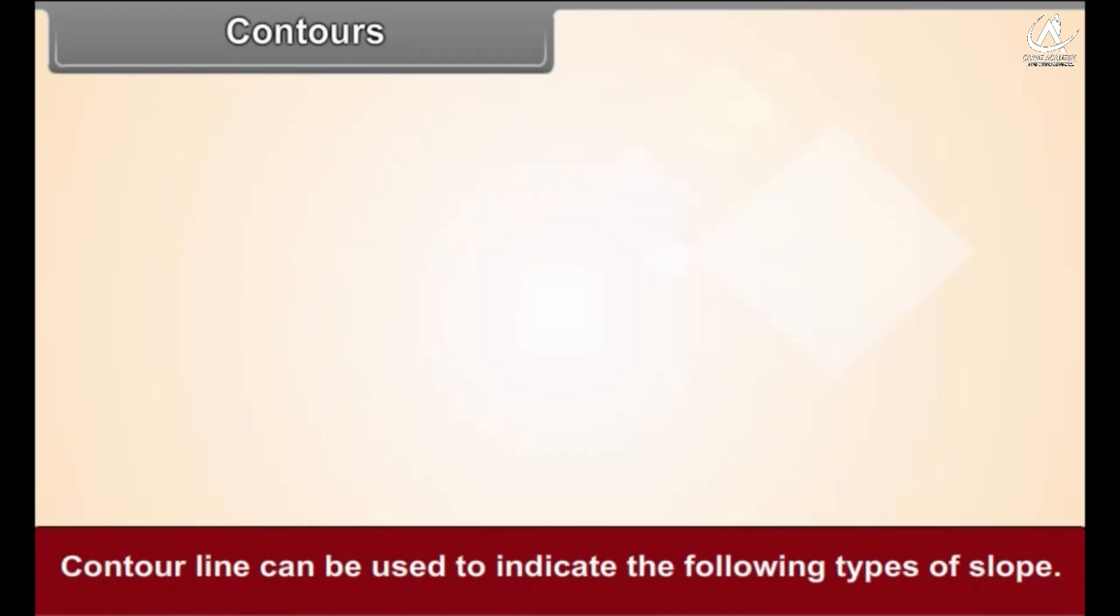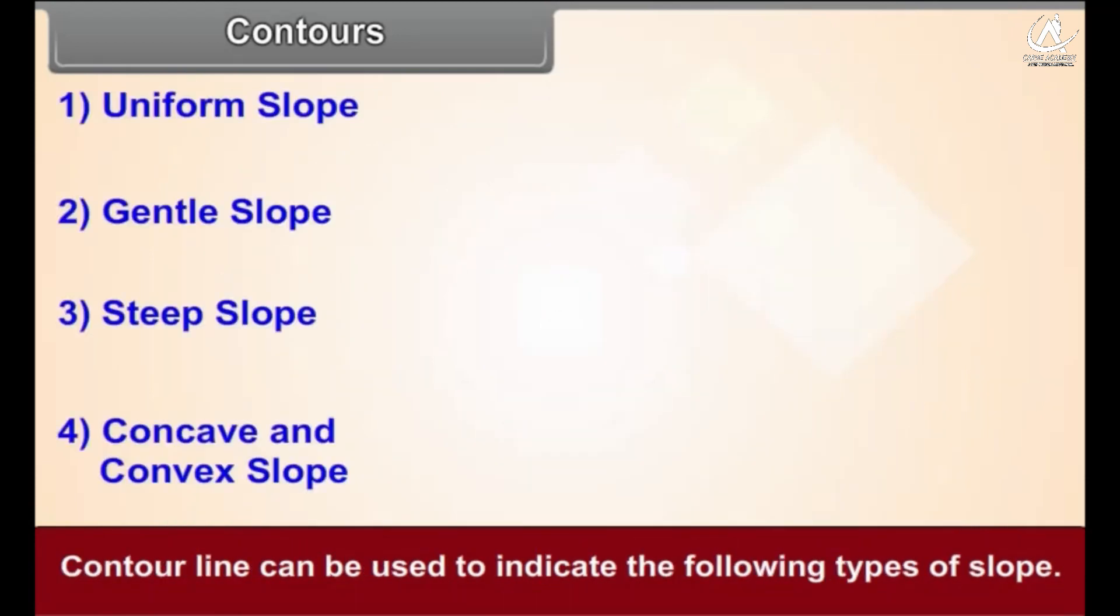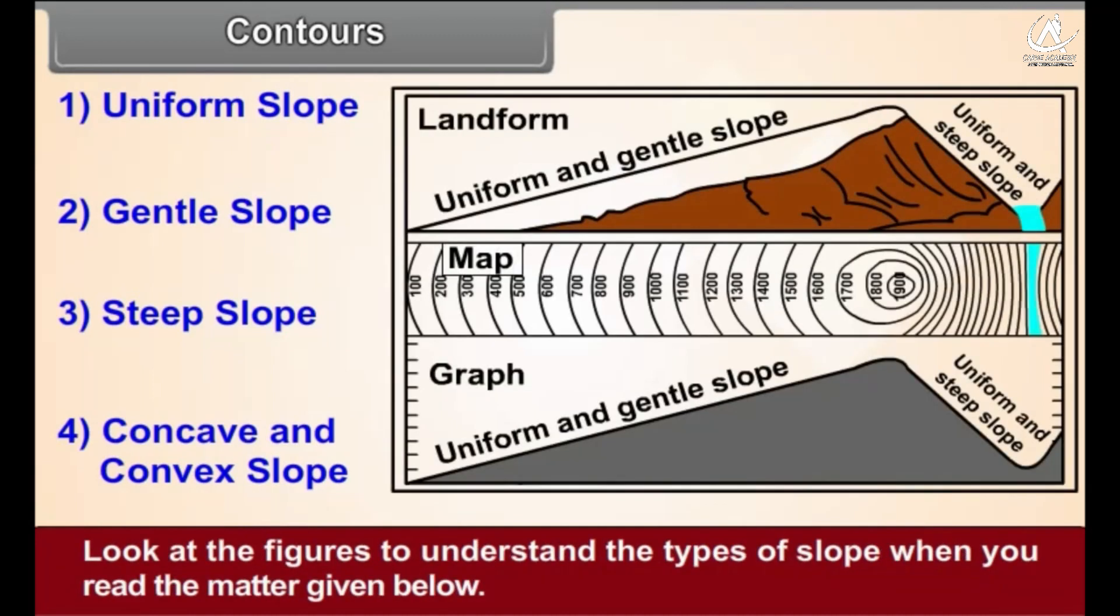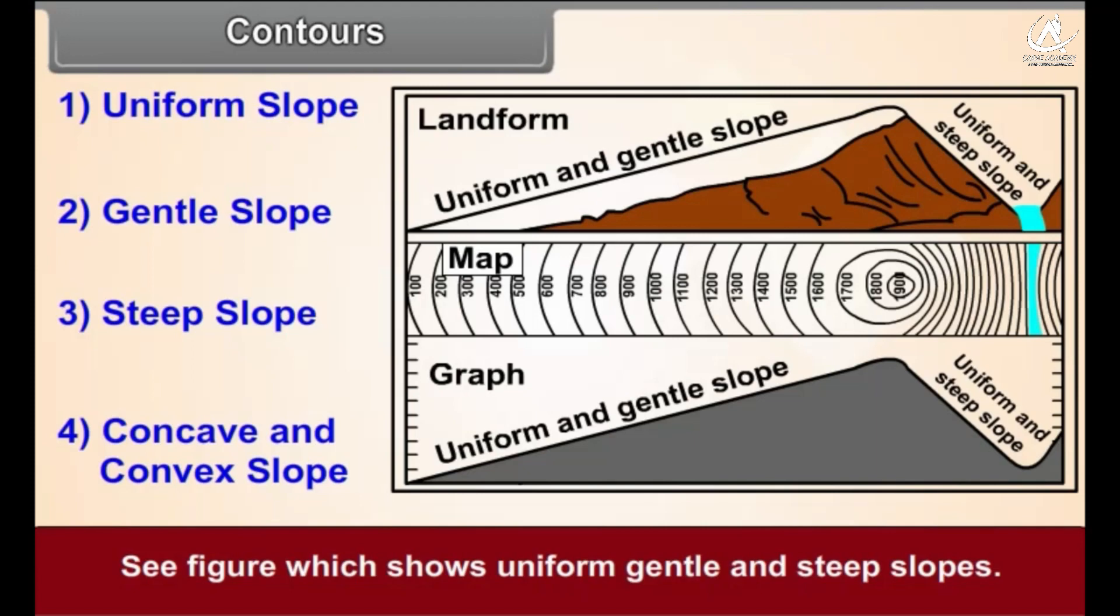Contour lines can be used to indicate the following types of slope. Look at the figures to understand the types of slope. When you read the matter given below, see figure 2.3 which shows uniform, gentle, and steep slopes.